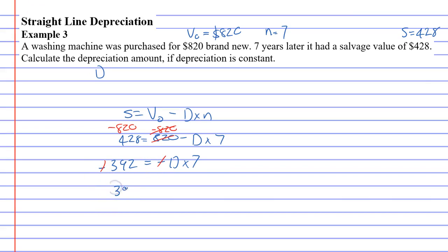Leaving us with 392 equals D times 7. To finish off, to get rid of the times 7, we're going to divide by 7 to cancel the 7. And that means we can find D. 392 divided by 7 is 56. So this washing machine depreciated by $56 each year over a period of 7 years.